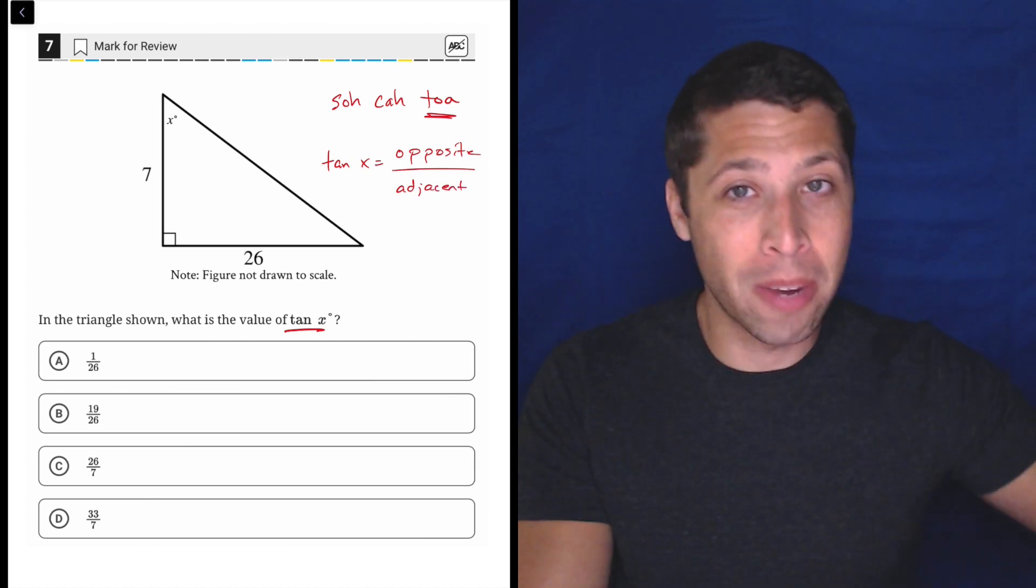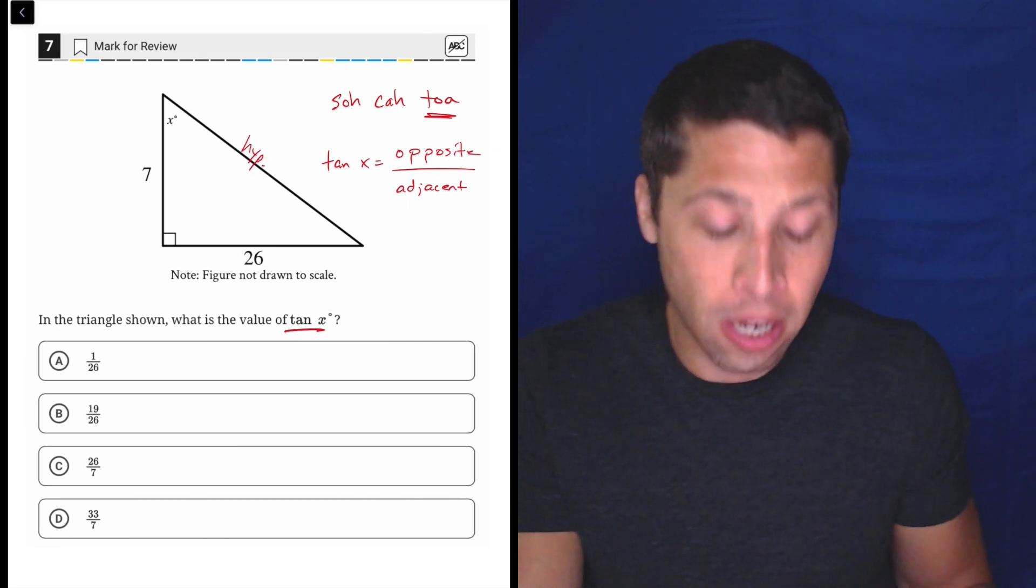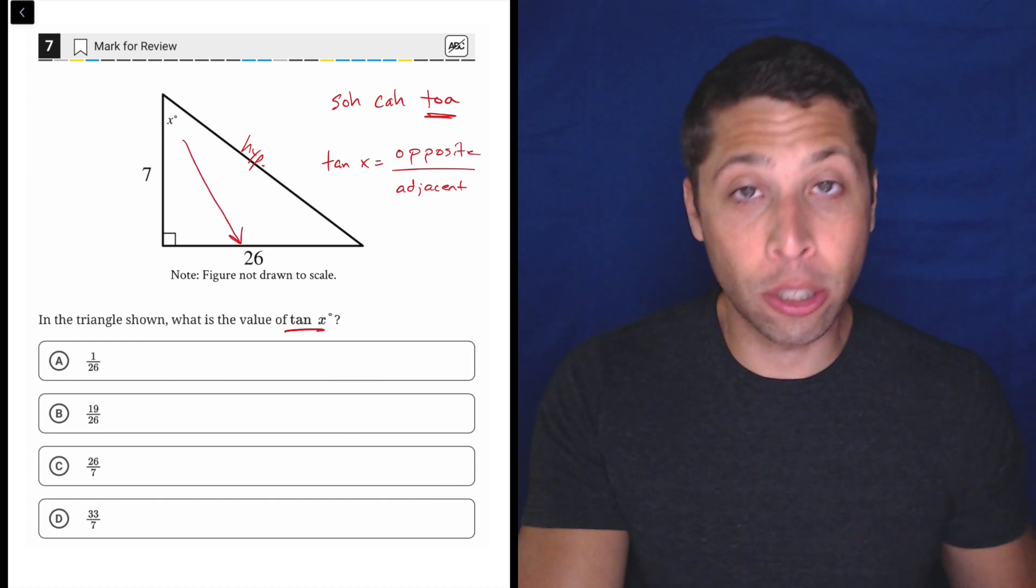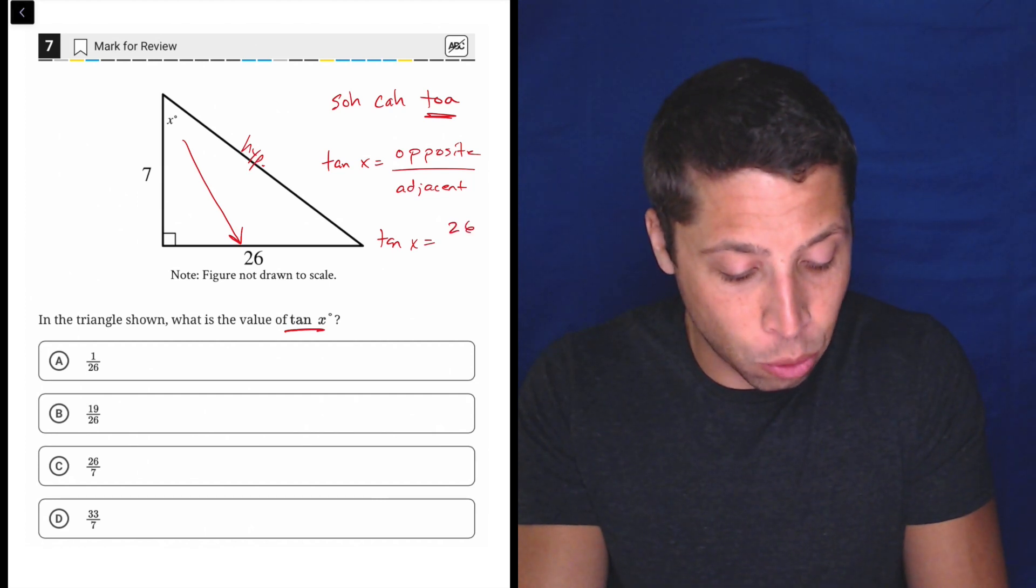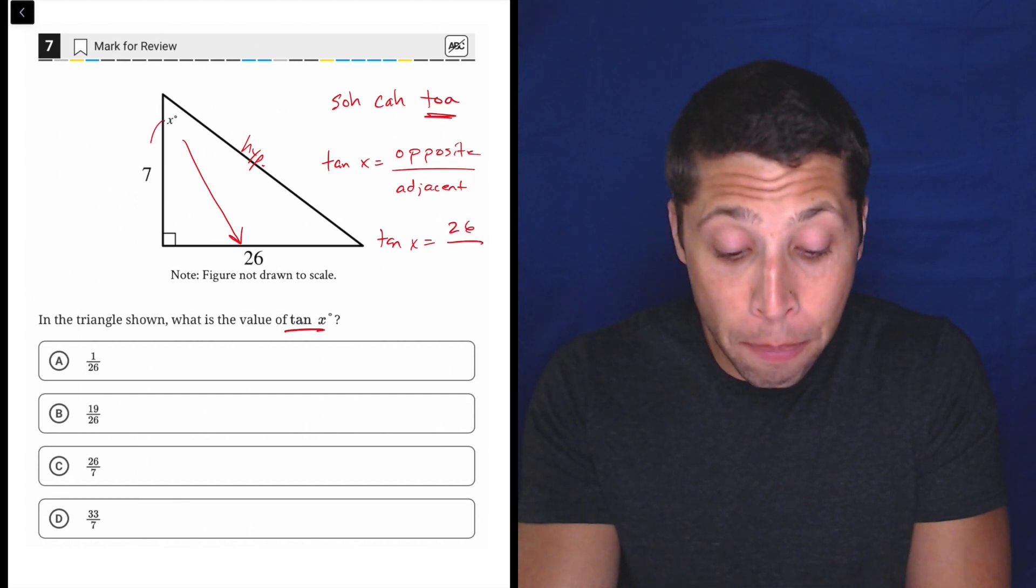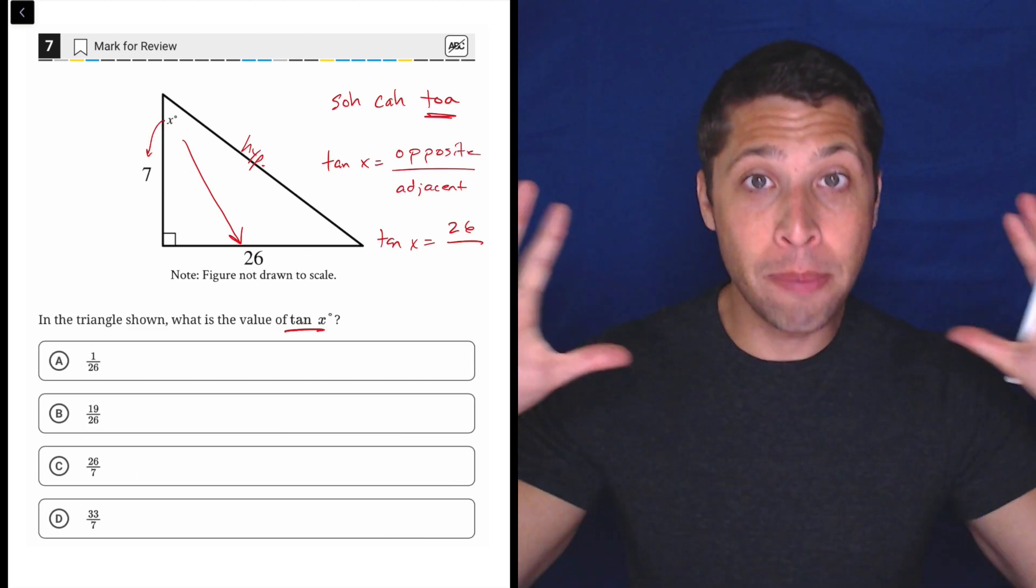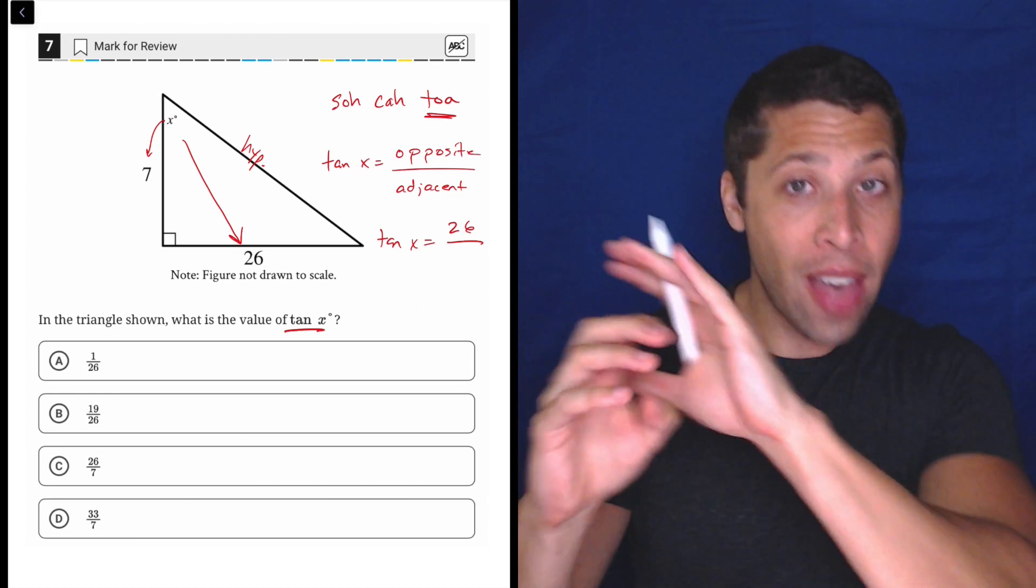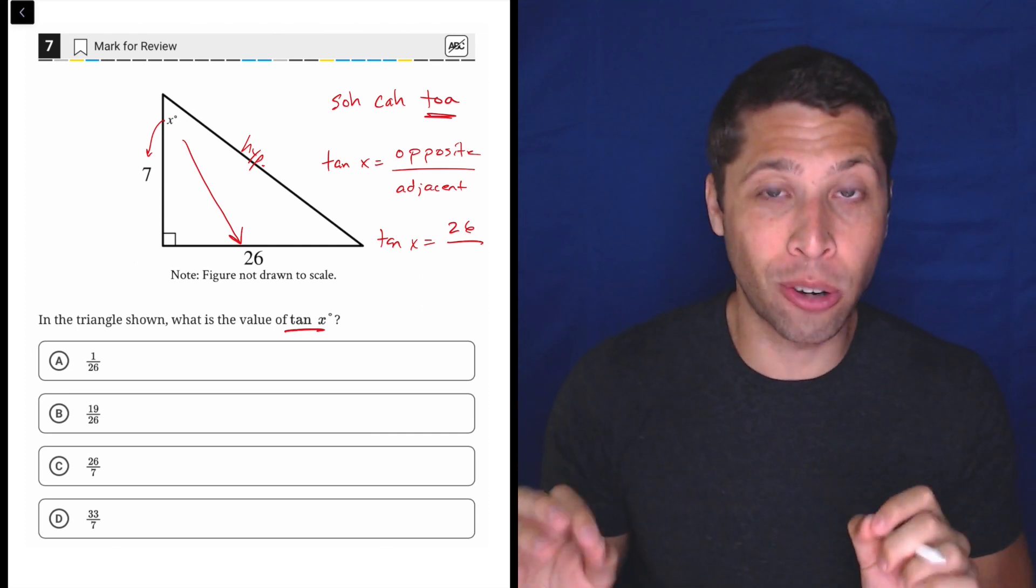So if this were a harder question, we might need to use Pythagorean theorem to find the hypotenuse, but we don't need that here. The opposite of X, just go directly across the triangle, is 26. So tangent of X is going to be 26. And the adjacent is the side that makes up the angle. That's not the hypotenuse, right? Hypotenuse is kind of like the main piece of a right triangle. So we always have the hypotenuse opposite the 90-degree angle. That's always going to be the hypotenuse, no matter what other angle we're talking about in the triangle.